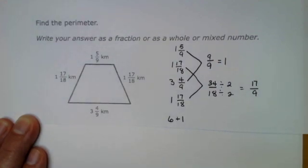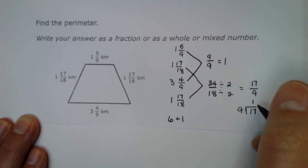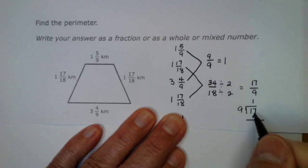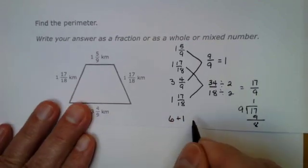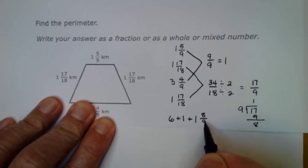Since this is an improper fraction, I need to change it to a mixed number. 9 will go into 17 one time. 17 minus 9 is 8. This is 1 and 8/9.